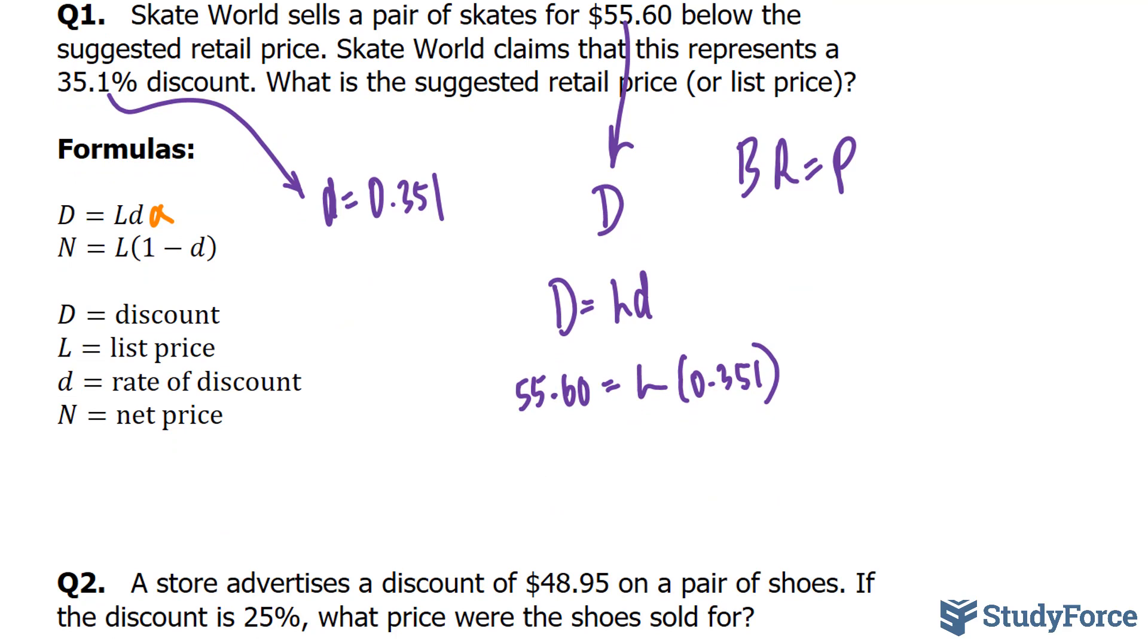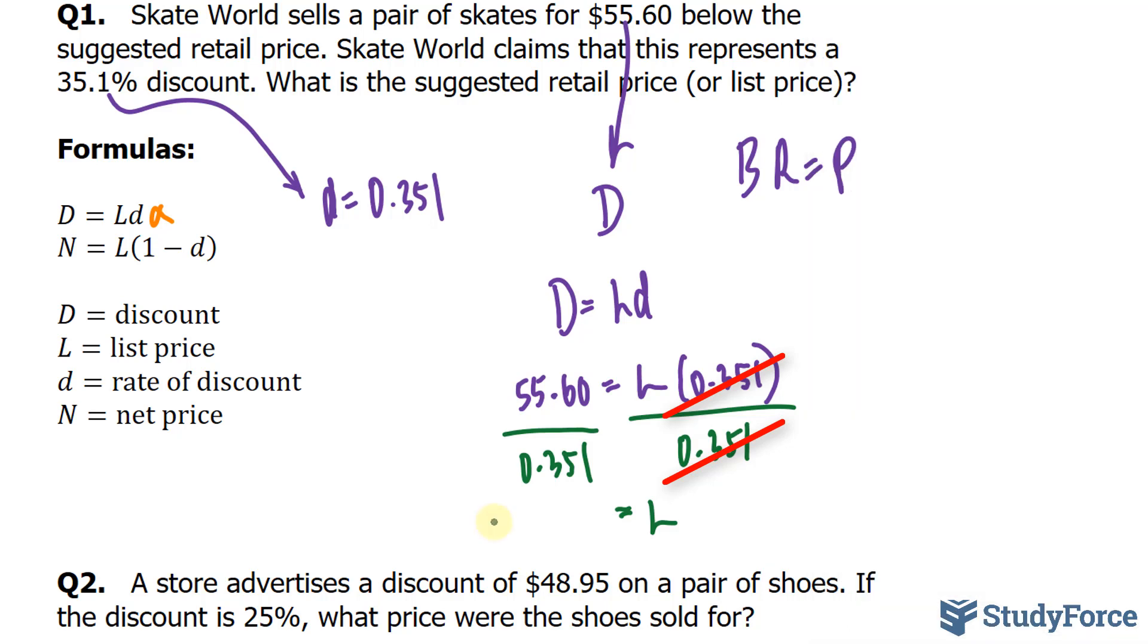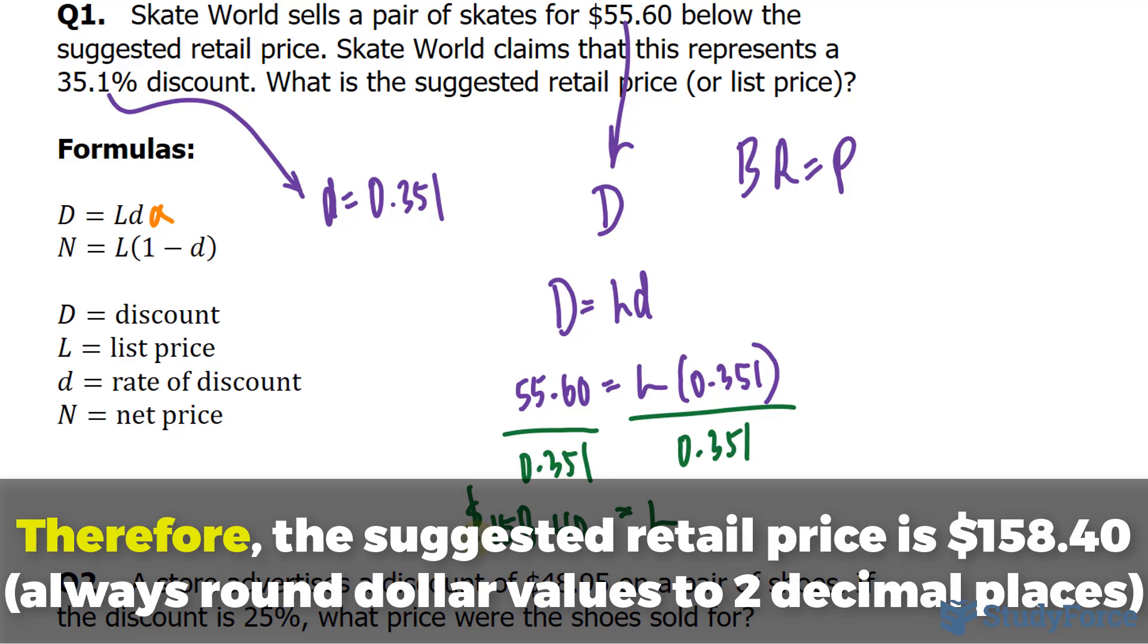All we have to do is apply some algebra by dividing both sides by 0.351, and we end up with capital L. So, using our calculator, we have 55.60 divided by 0.351, and we end up with, we want to round this to two decimal places, 158.40. Therefore, the suggested retail price before the discount is $158.40.